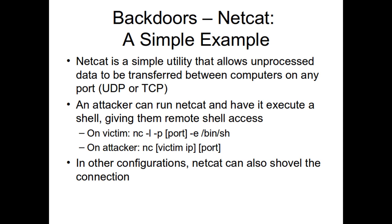TCP basically guarantees the delivery of a packet — when you send a packet, you wait to make sure the recipient has acknowledged receipt. UDP — you just send the packet and hope. UDP is good for things where it doesn't matter if a little bit is dropped, like video. If a single packet gets dropped in a video, who cares — the human eye can't notice it. TCP is used for stuff where the data needs to remain the same, like sending text.